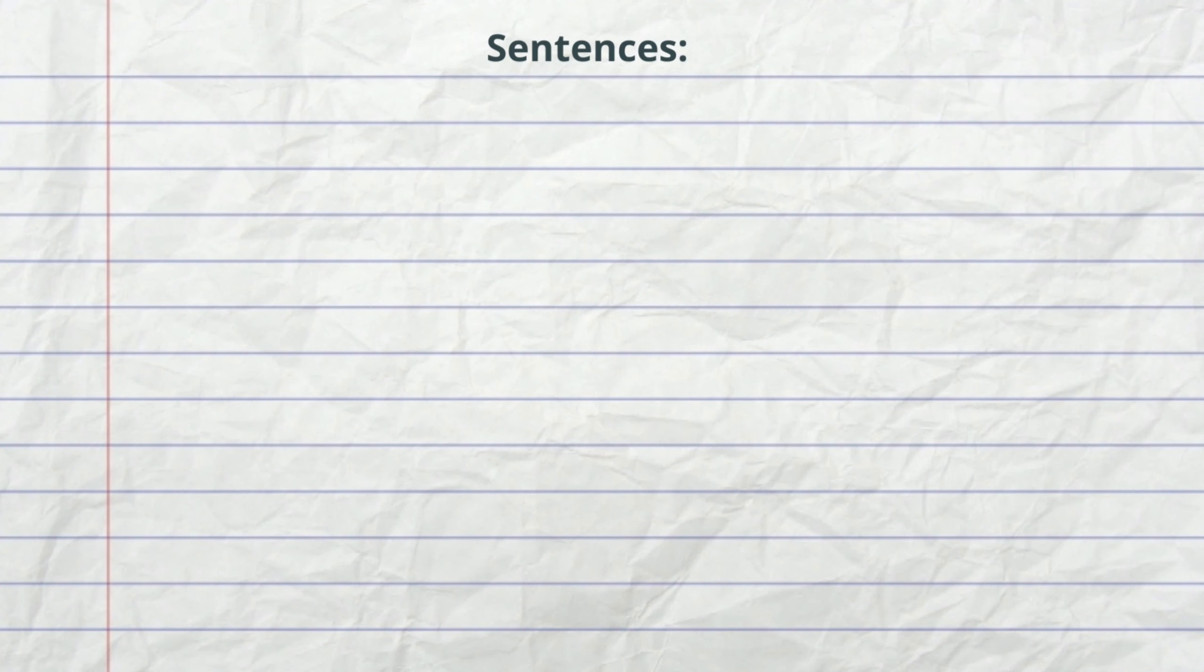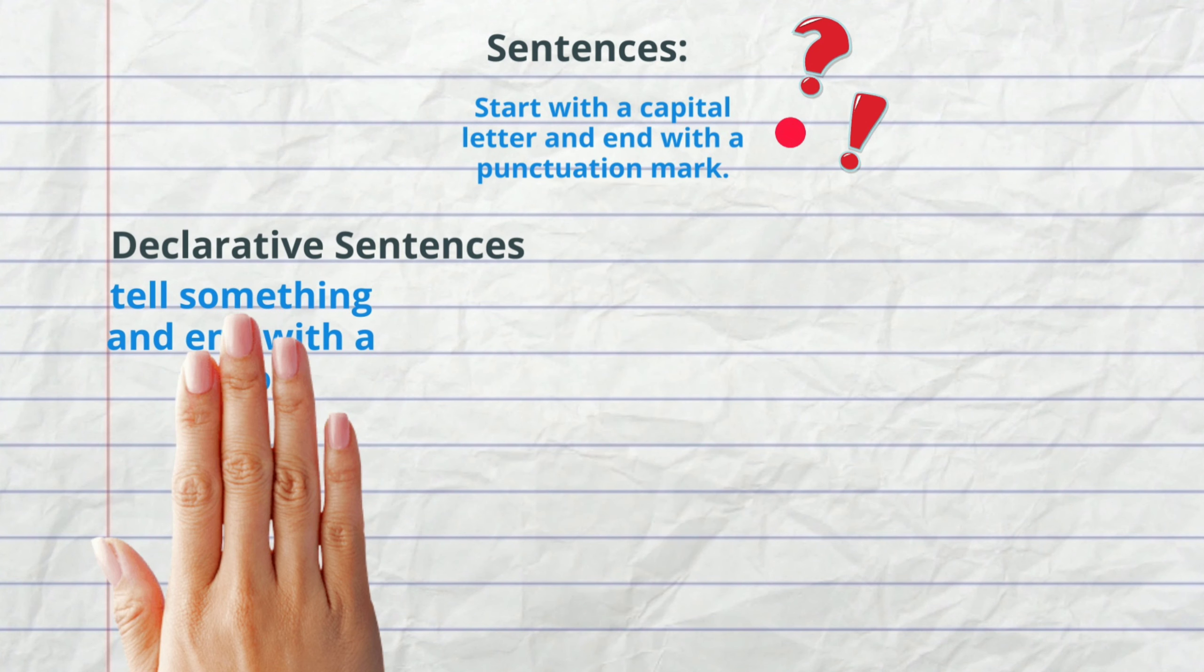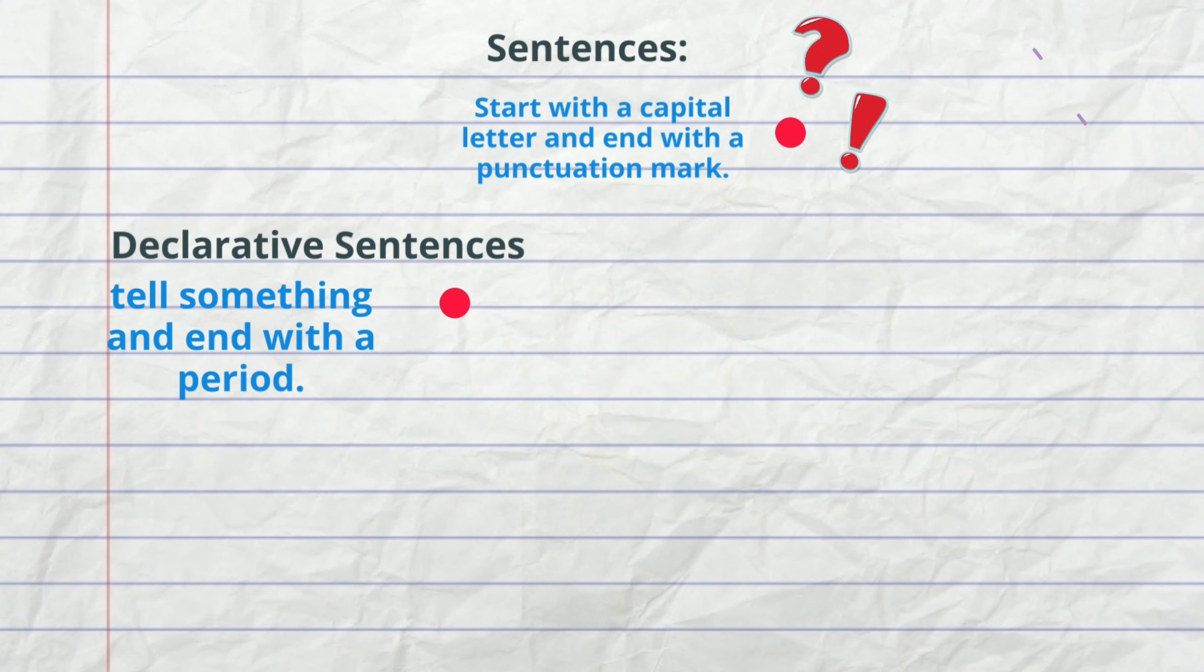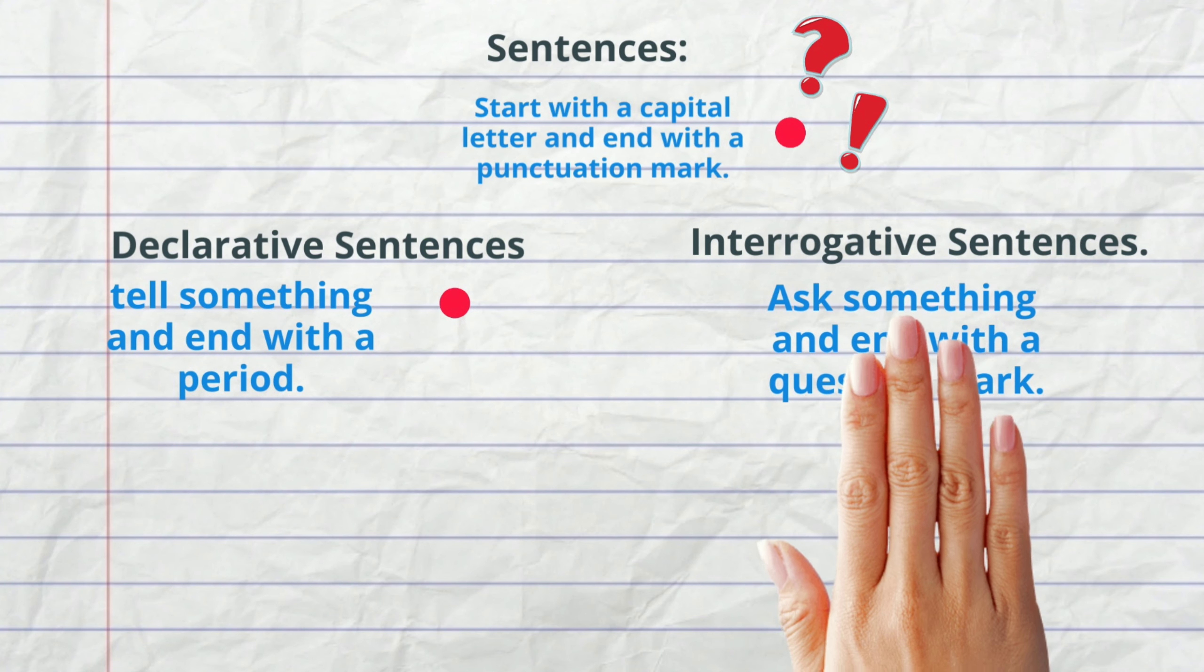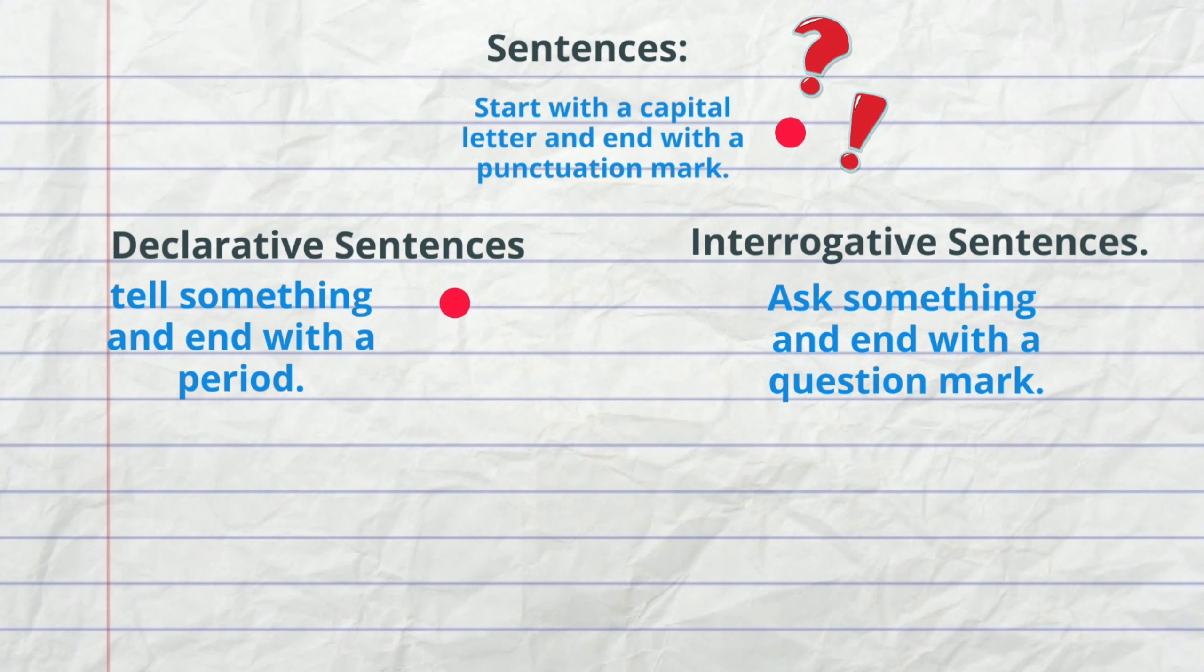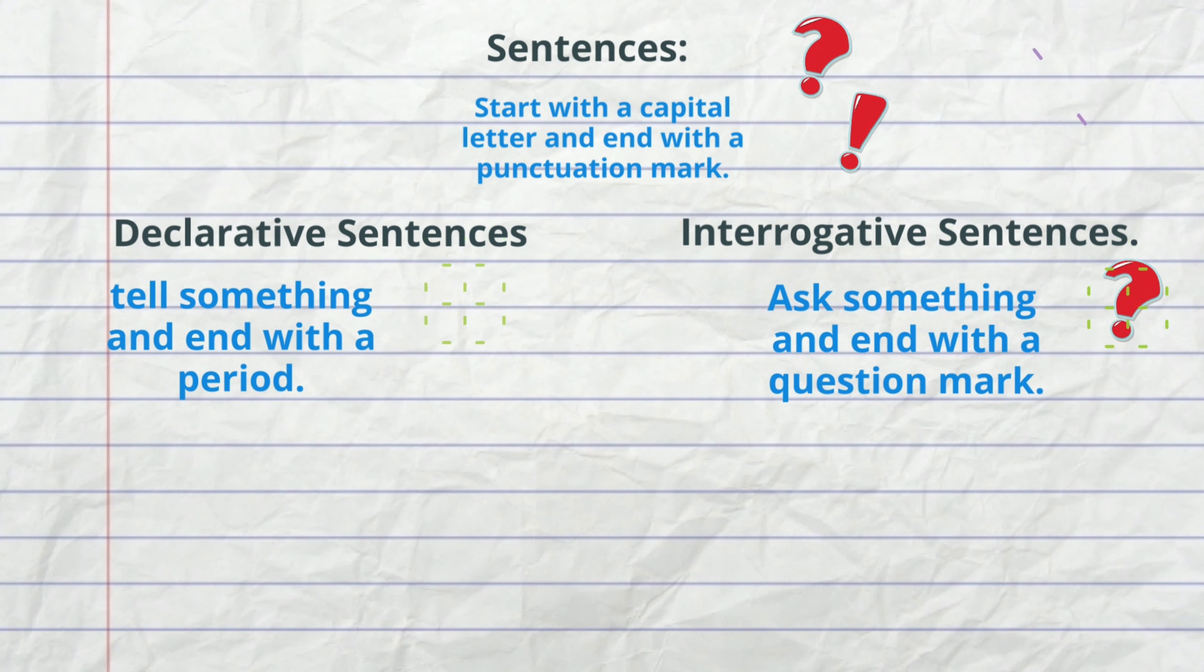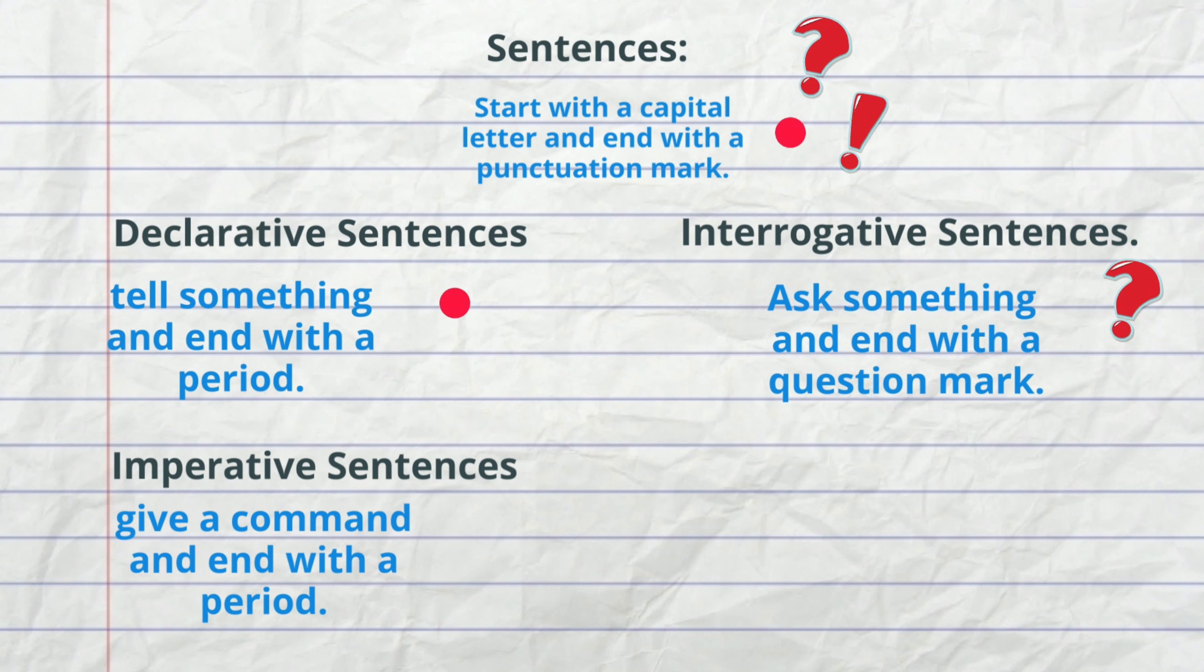Sentences start with a capital letter and end with a punctuation mark. Declarative sentences tell something and end with a period. Interrogative sentences ask something and end with a question mark. Imperative sentences give a command and end with a period. Exclamatory sentences show strong feelings and end with an exclamation mark.